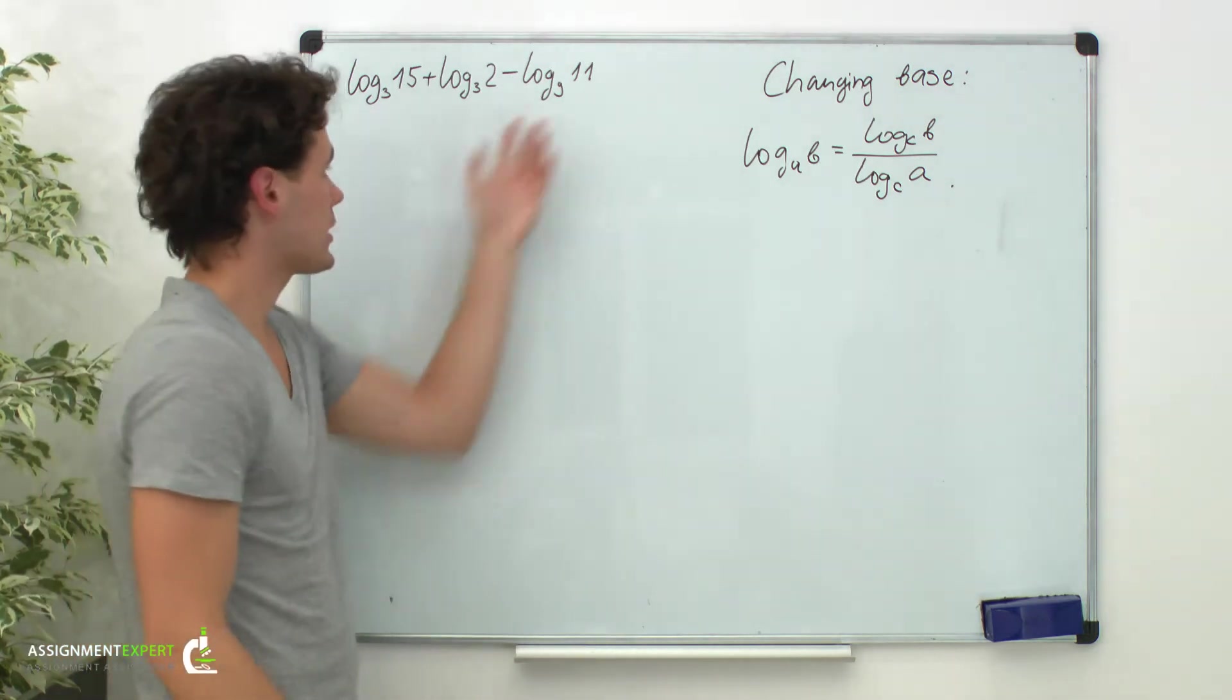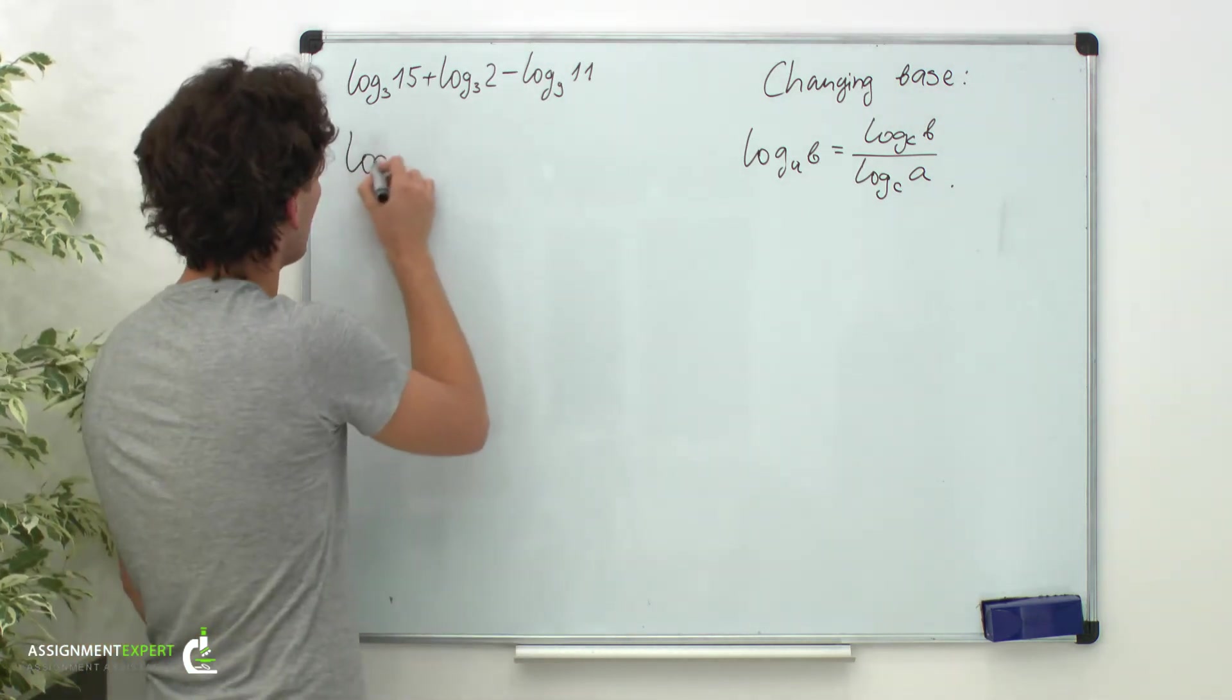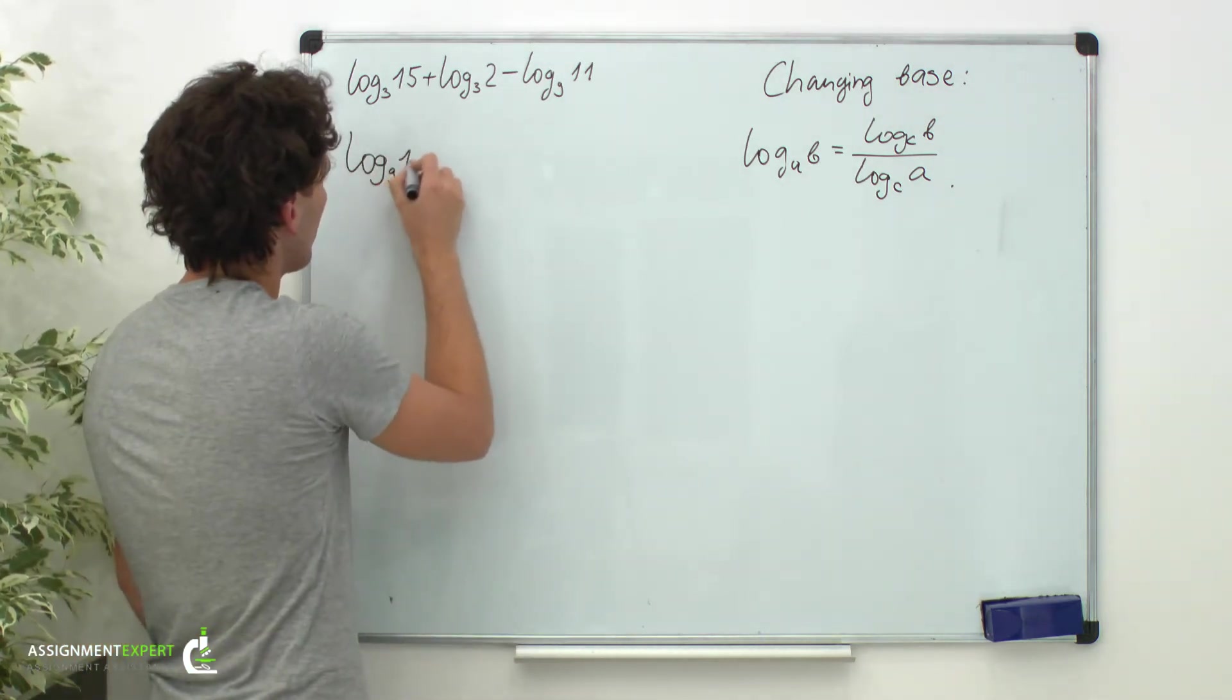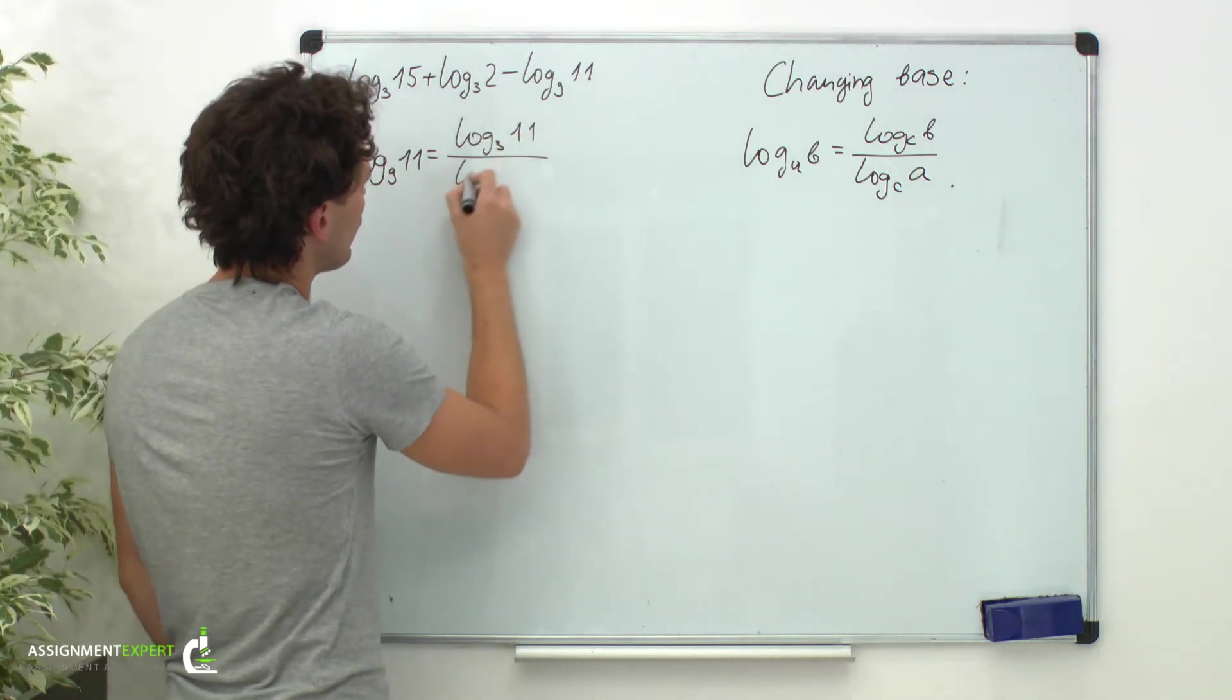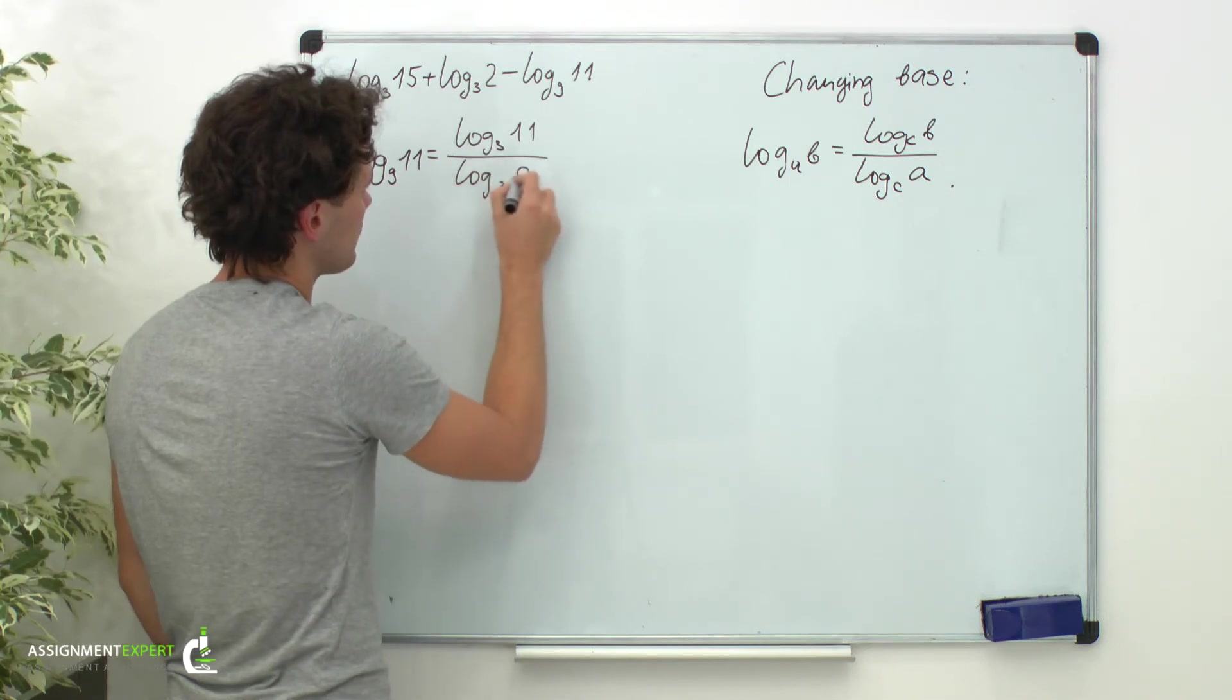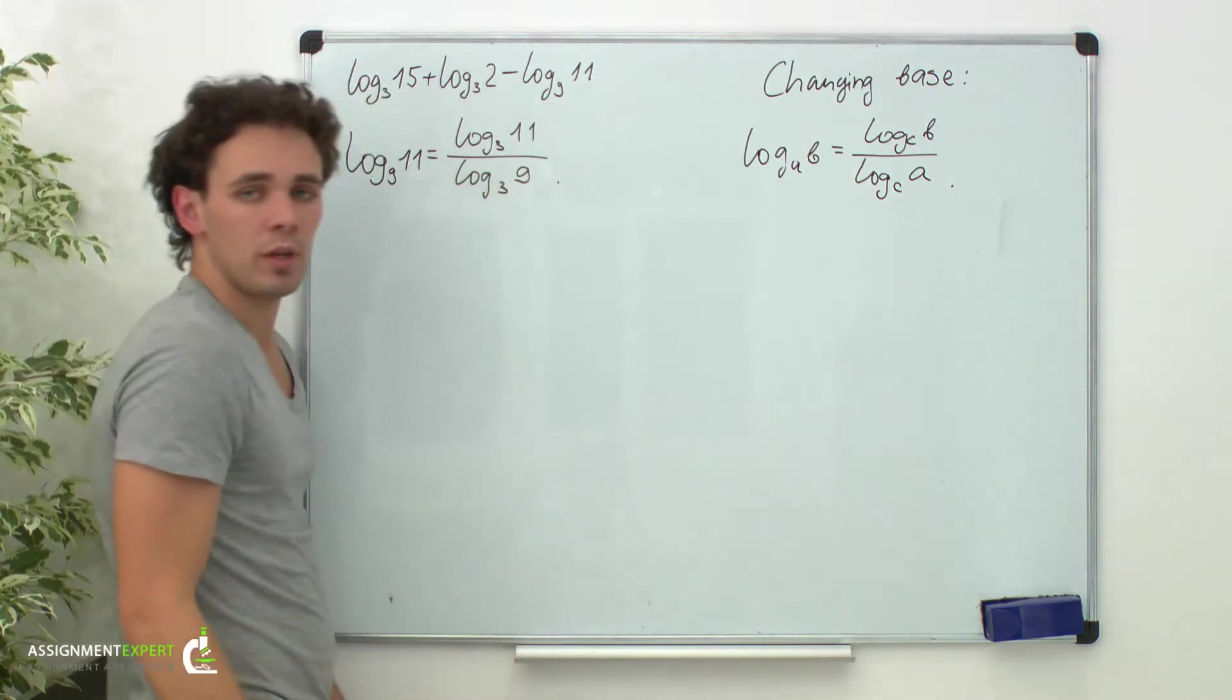Applying this formula to the last logarithm we obtain the following: log base 9 of 11 equals log base 3 of 11 over log base 3 of 9. So we obtain the fraction.